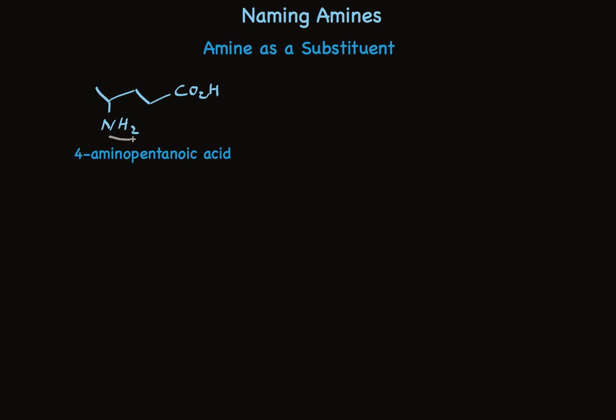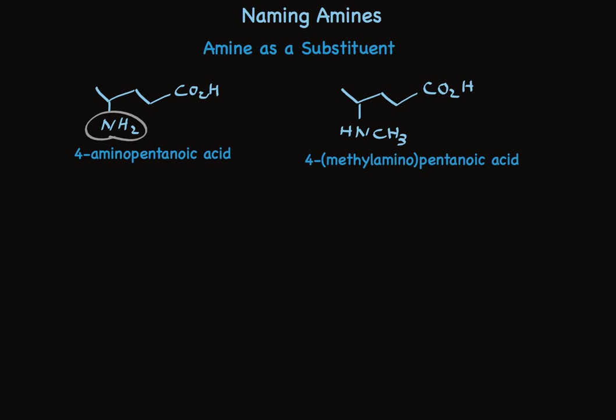When it's just a primary NH2 group in a molecule that has a higher priority functional group, we call it the amino group. In this case it's pentanoic acid, and the amino group is at the 4-position: 4-aminopentanoic acid. If there's an alkyl group attached to the nitrogen, that is a methylamino group. We do not use the capital N here, because methylamino tells you exactly where it is, but we put the 4 in front to tell us where the methylamino group is located.